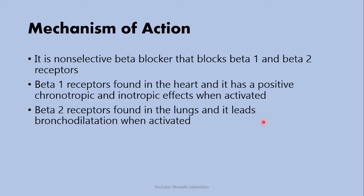An easier way to remember them: beta 1 is found in the heart, so 1 is for 1 heart, and beta 2 is found in the lungs, and 2 is for 2 lungs. This is an easier way to remember them.